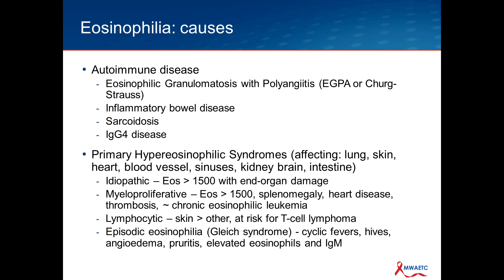For autoimmune diseases, EGPA — formerly called Churg-Strauss disease — is associated with hypereosinophilia, as is inflammatory bowel disease. Granulomatous diseases like sarcoid can be associated with eosinophilia, as can IgG4 disease. Primary eosinophilic syndromes affecting all kinds of tissues can be idiopathic, with eosinophilia usually quite high — much higher than 1500 — and associated with organ damage. Myeloproliferative disease occurs with splenomegaly, heart disease, thrombosis, and can evolve into chronic eosinophilic leukemia. Some T-cell lymphomas are associated with HTLV-1, which is associated with eosinophilia.